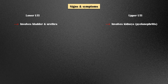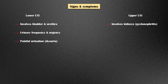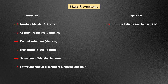Symptoms of lower urinary tract infections include urinary frequency and urgency, painful urination also known as dysuria, hematuria or blood in urine, a sensation of bladder fullness, lower abdominal discomfort and suprapubic pain, and smelly urine.